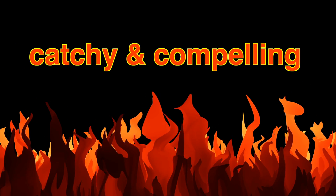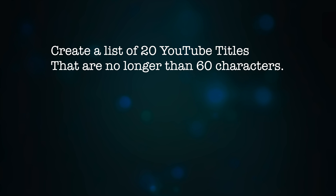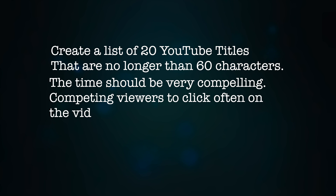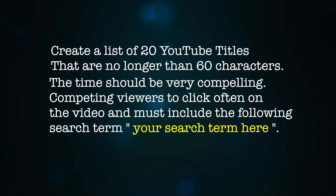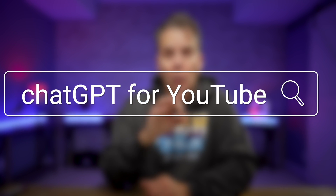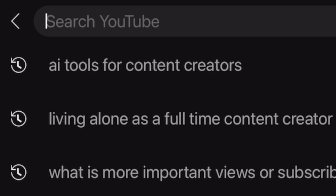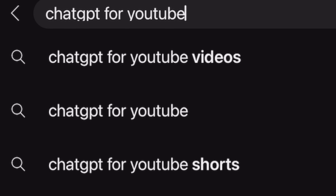Number two, we have to be catchy and compelling. So far, this is what our prompt looks like: 'Create a list of 20 YouTube titles that are no longer than 60 characters. The title should be very compelling, compelling viewers to click, and must include the following search term.' Then you simply add in a two-word phrase in quotes that really describes what your video is all about. All you have to do to find that keyword phrase is go to YouTube and think: what would people search for if they were looking for this particular video? In my case, it was 'ChatGPT YouTube' or 'ChatGPT for YouTube' — two to three words is fine. When you add all this together, you get a list of fantastic video titles that have the compelling element and the keyword phrase that YouTube recommends.